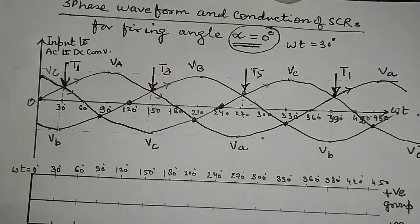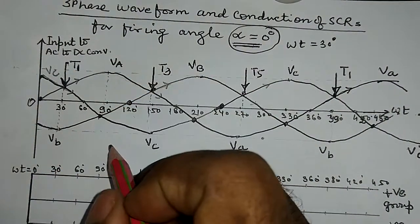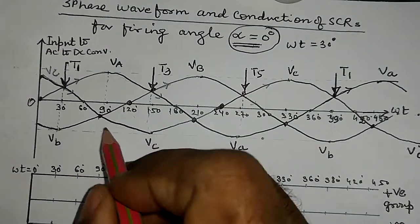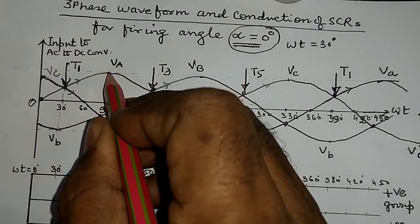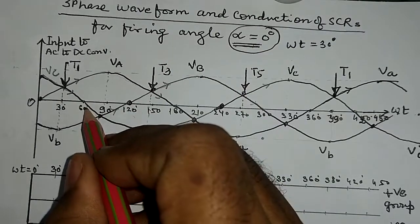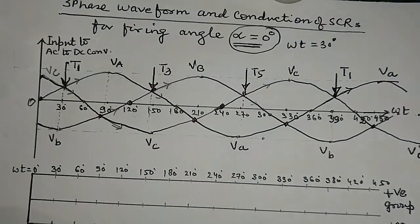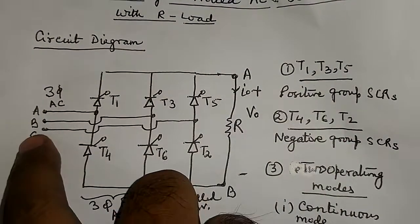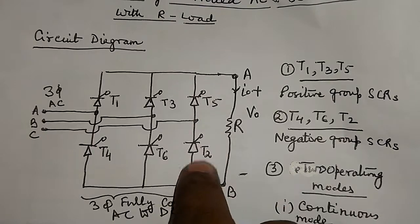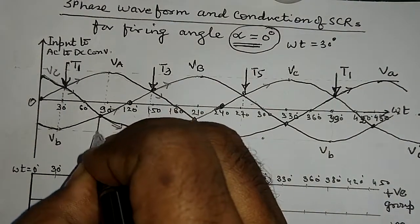Looking at the zero crossings below the x-axis, at ωt = 90°, we investigate which voltage is most negative. Vb is going upward and Va is positive at ωt = 90°, therefore Vc is going to be the most negative voltage. With the C line, T2 SCR is connected from the negative group. Therefore, for α = 0°, T2 is triggered at ωt = 90°.